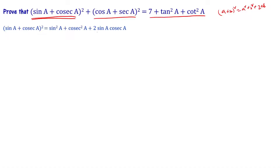Now, cosec a equals 1/sin a. So sin a multiplied by cosec a — the sin a cancels. This simplifies to sin²a + cosec²a + 2.